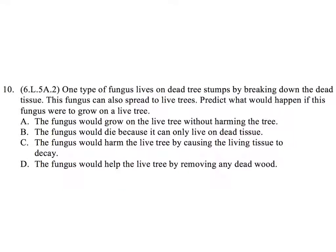Question 10. One type of fungus lives on dead tree stumps by breaking down the dead tissue. This fungus can also spread to live trees. Predict what would happen if this fungus were to grow on a live tree. A. The fungus would grow on the live tree without harming the tree. B. The fungus would die because it can only live on dead tissue. C. The fungus would harm the live tree by causing the living tissue to decay. D. The fungus would help the live tree by removing any dead wood.